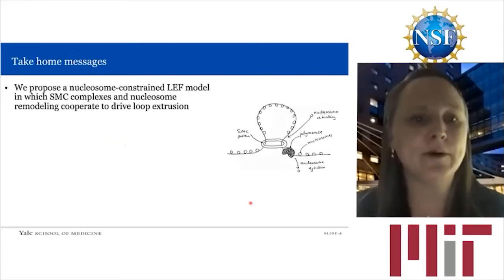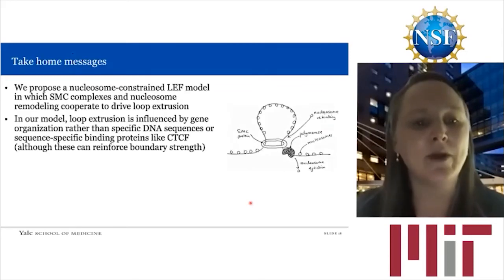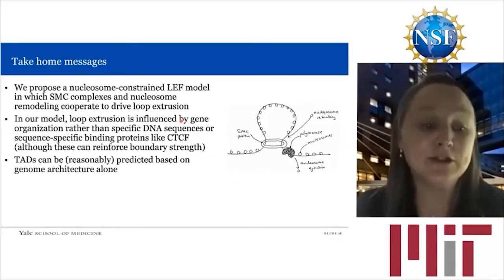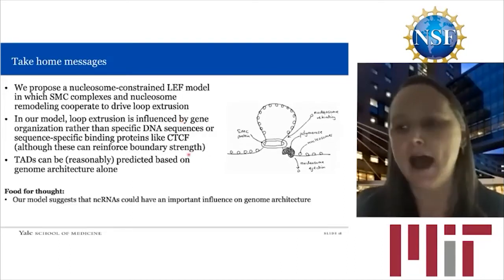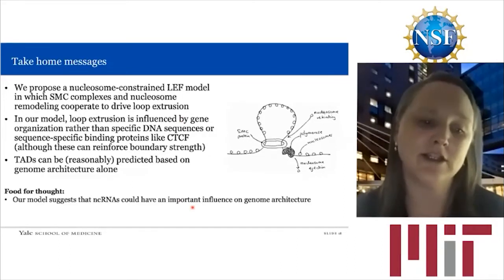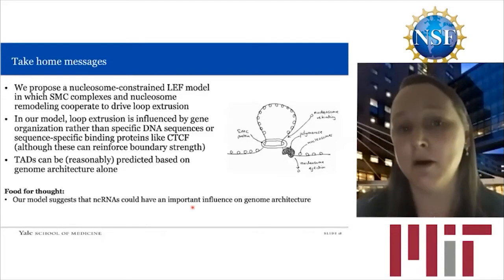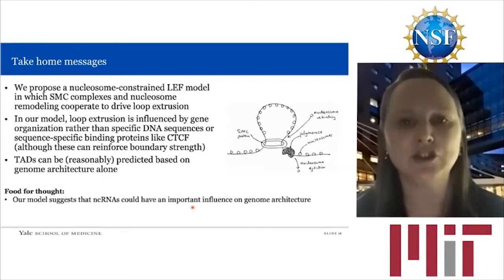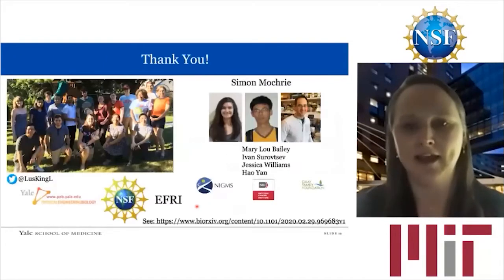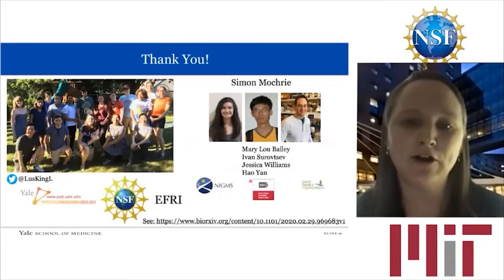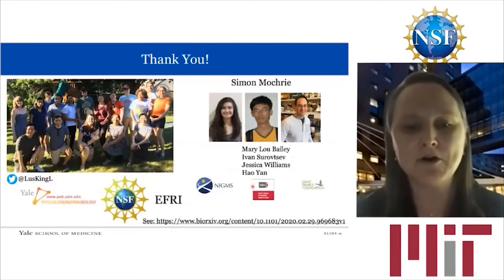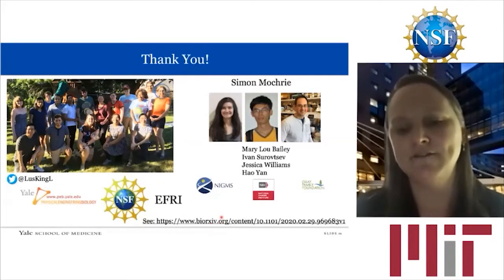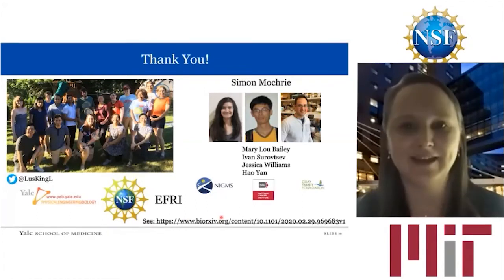The take-home message is that genome architecture alone — just the position of genes — can predict TADs and boundaries. Strong boundaries can be predicted equally well by this model or by modeling CTCF distribution. In the mouse genome, it is actually more complex than simply having boundaries at convergent genes. Our model suggests that non-coding RNAs could be important for remodeling topological domains independent of any function of the transcript itself. I want to thank this fantastic group, my collaborator Simon Mokery, and funding from the NSF through the EFRI program. You can find out more about this on the bioarchive.